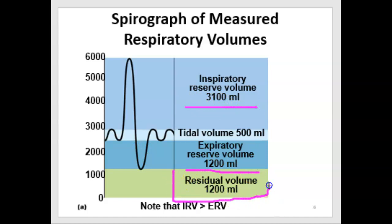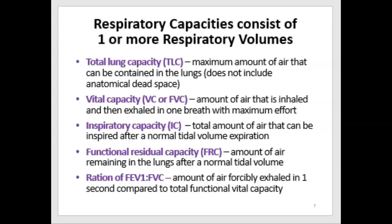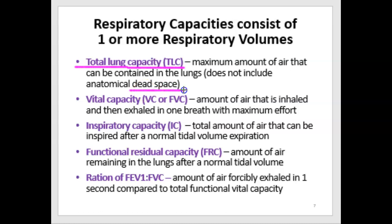Residual volume is typically 1,200 mils always present in the lungs. Now let's look at capacities, which are very important clinically. These are calculated — different volumes added together. Total lung capacity is the maximum amount of air that can be contained in the lungs, not including dead space. Total lung capacity equals residual volume plus expiratory reserve plus tidal volume plus inspiratory reserve. We'll go over that again.